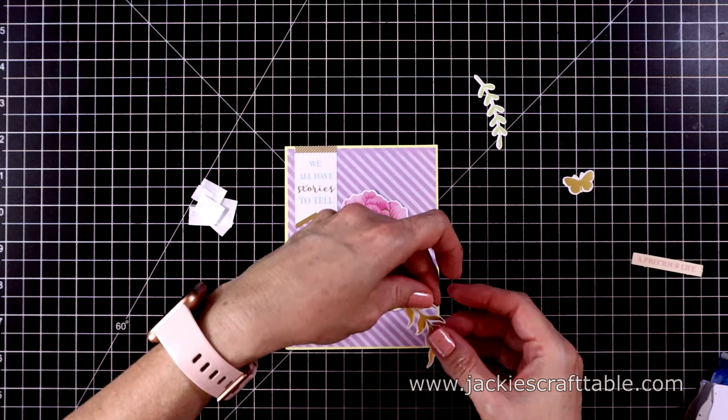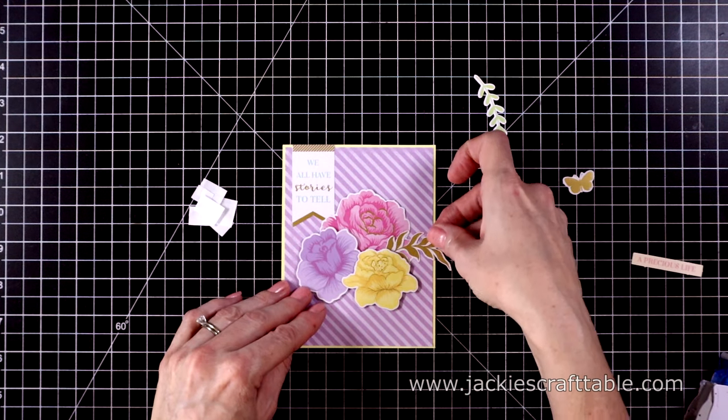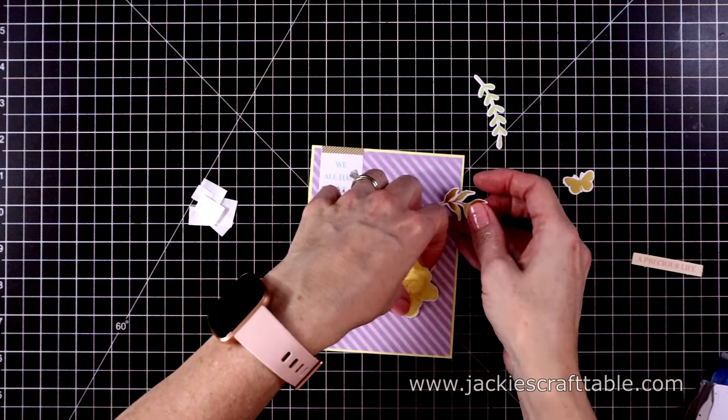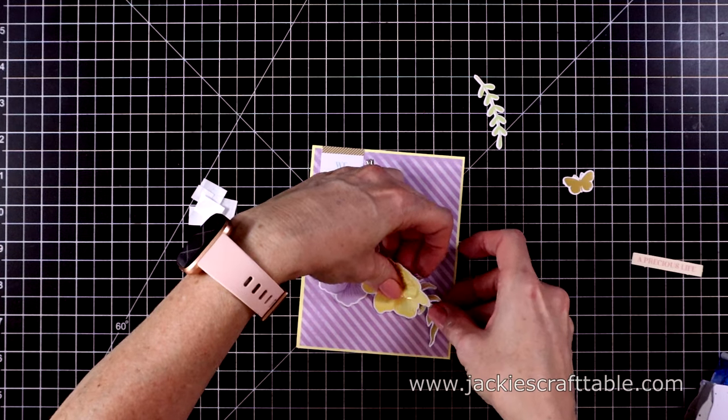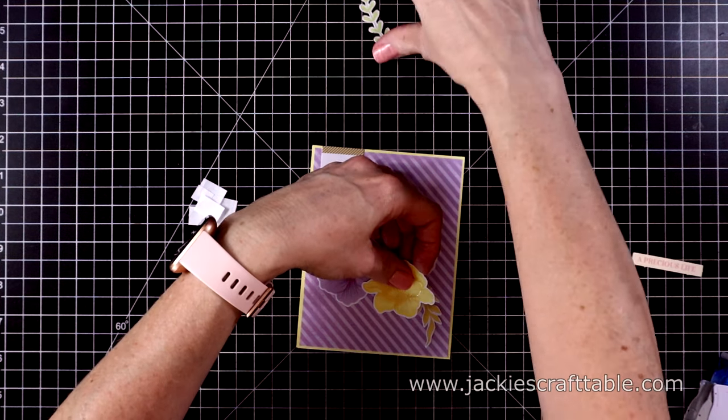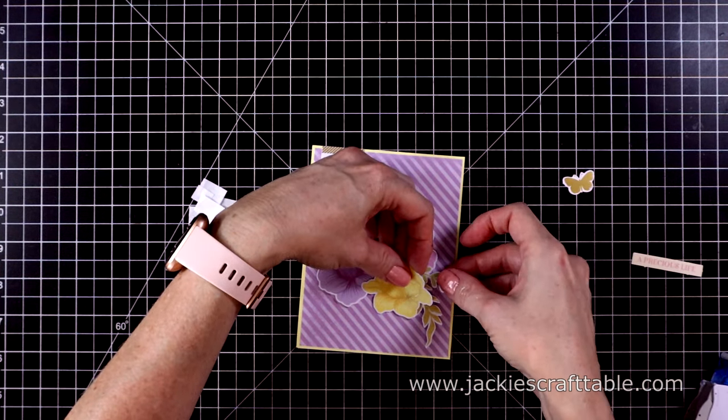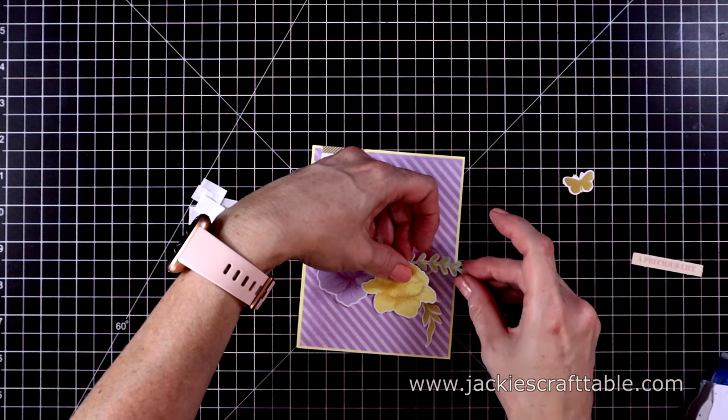I'm going to peel up the yellow rose again and add some leaves behind it. I like this gold and the green together.